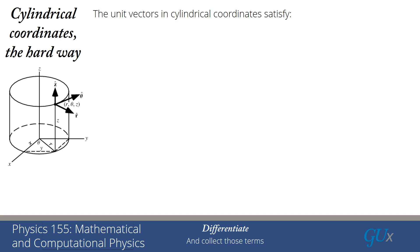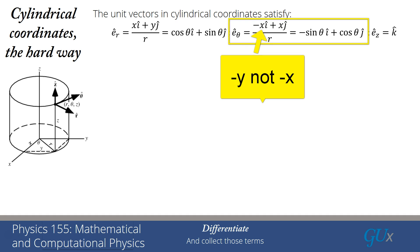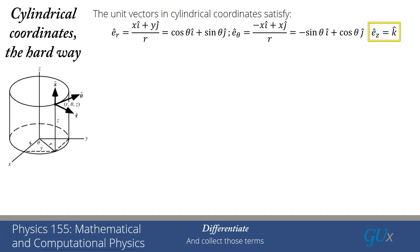The unit vectors in cylindrical coordinates: the radial vector is x times the unit vector in the x direction plus y times the unit vector in the y direction, divided by r. Using the representation of x and y in terms of r and theta, we write that as cos theta i-hat plus sin theta j-hat. e_theta is perpendicular to that and in the xy plane — it should be minus y i-hat plus x j-hat divided by r — giving minus sin theta i-hat plus cos theta j-hat. And e_z is simply equal to the unit vector in the z direction.